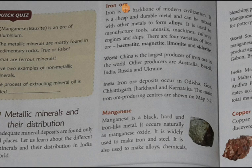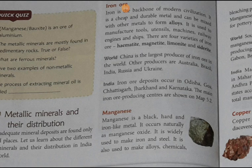First: iron ore. Iron is the backbone of modern civilization. It is a cheap and durable metal and can be mixed with other metals to form alloys. It is used to manufacture tools, utensils, machines, railway engines, and ships. There are four varieties of iron ore: hematite, magnetite, limonite, and siderite.